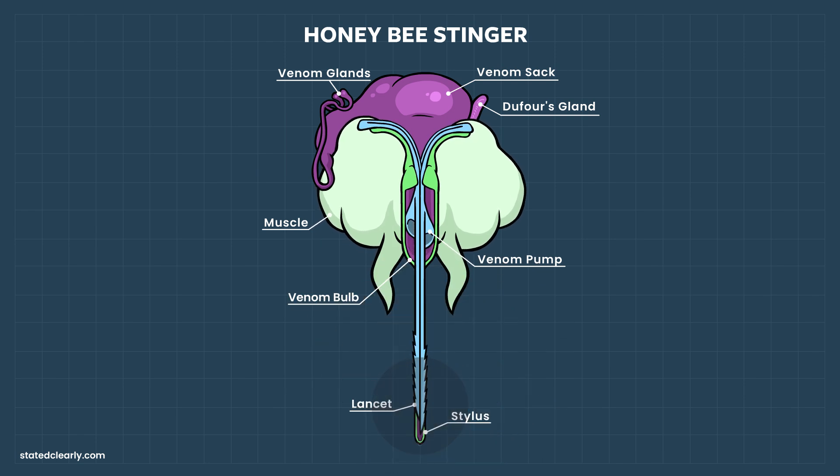Here's an animated diagram of the entire stinger. Muscles, venom sac, venom pumps, and all.